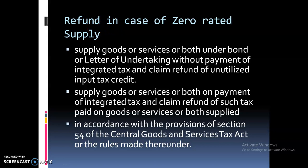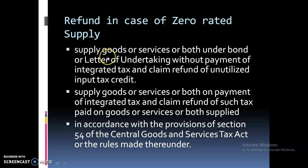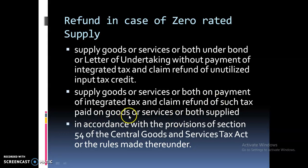Agar zero rated supply hai to usme tax nahi aayega, to input tax credit ka aap refund claim kar sakte ho. Refund claim karne ke liye do tarike hain. Ek tarika hai ki aap export under Letter of Undertaking (LUT) karo — without payment of IGST — export of goods aur services karo aur baad mein unutilized ITC ka refund claim karo. Doosra tarika yeh hai ki aap goods aur services ka supply on payment of IGST karo aur claim refund of such IGST. Refund ke yeh tarike Section 54 of CGST Act aur rules made thereunder mein diye gaye hain.